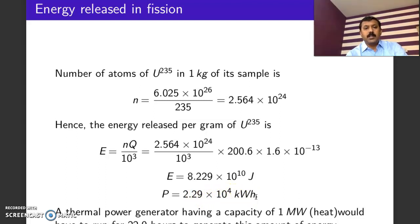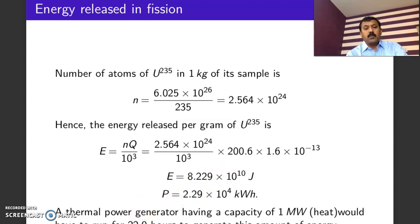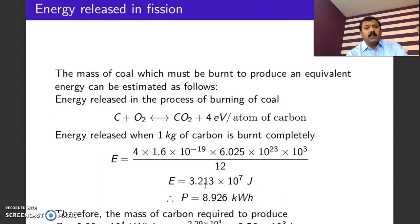Just consider the amount of energy: fission of just 1 gram of uranium sample yields around 2.29 × 10⁴ kilowatt-hours of energy. That means if you have a thermal power generator with a capacity of 1 megawatt, you would need to run that thermal power plant for about 22.9 hours to produce an equivalent amount of energy — and that is just generated by the fission of 1 gram of uranium. That shows the power of the fission process.